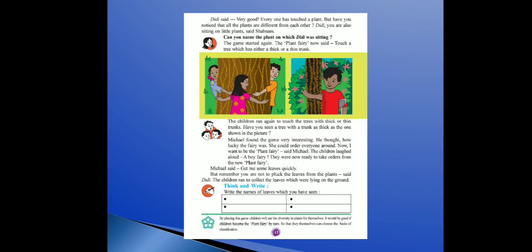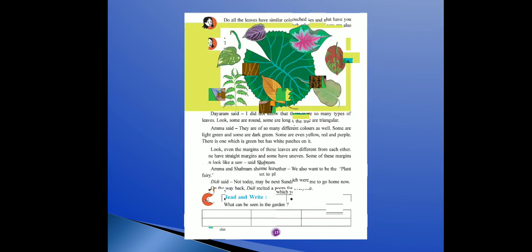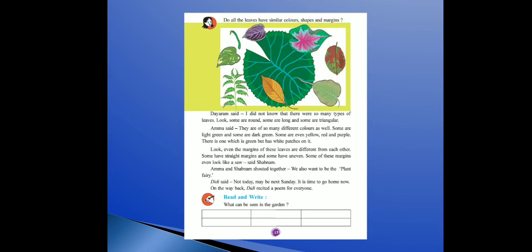Do all the leaves have similar colors, shapes and margins? Margins means jagah — jo leaves mein jagah hoti hai use margins bolte hain. Picture mein alag-alag types ke leaves hain. Toh kya unke sab ke color, shapes, aur margins ek jaise hote hain?